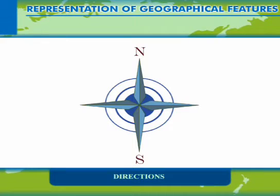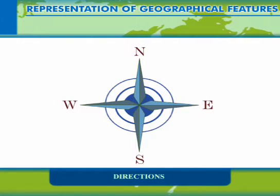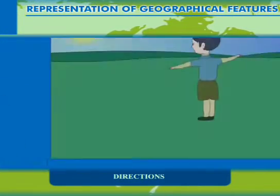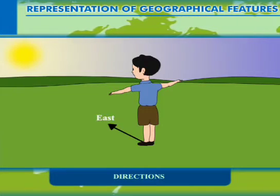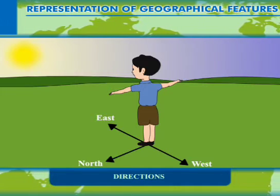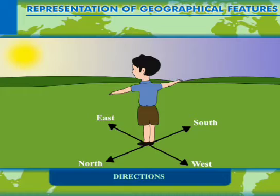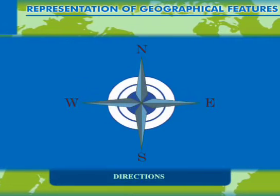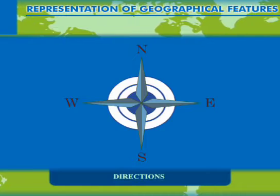Opposite to the north, the bottom represents the south. The left-hand direction is the west and on the right-hand side is the east. On the land, when we face the rising sun, we face the east; the west lies behind us. The left-hand shows north and south lies towards our right. The four main directions are referred to as the cardinal directions.